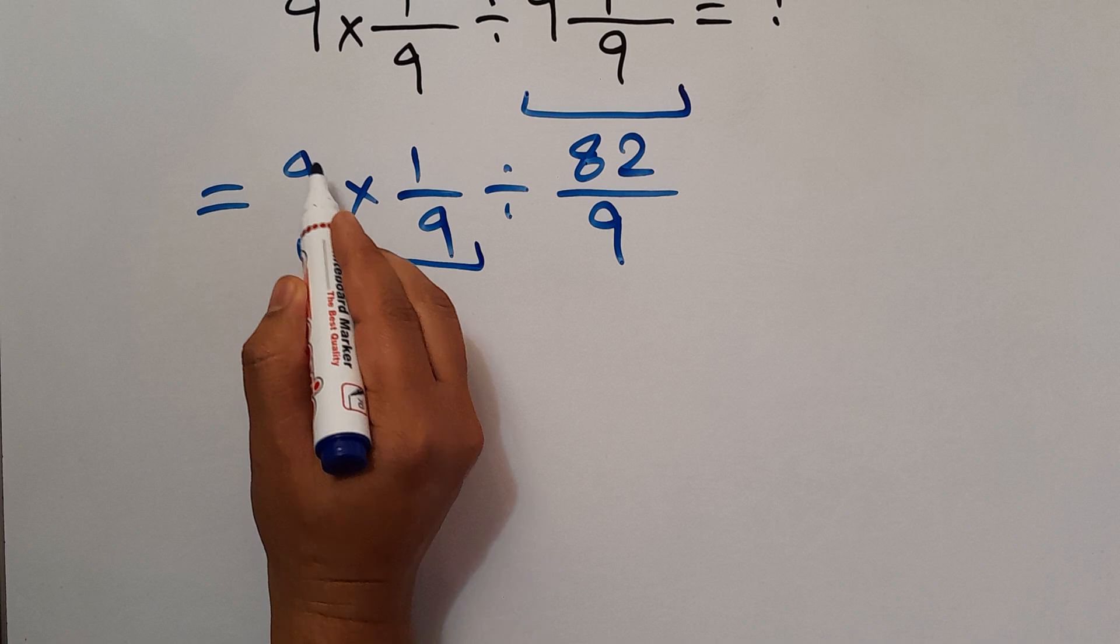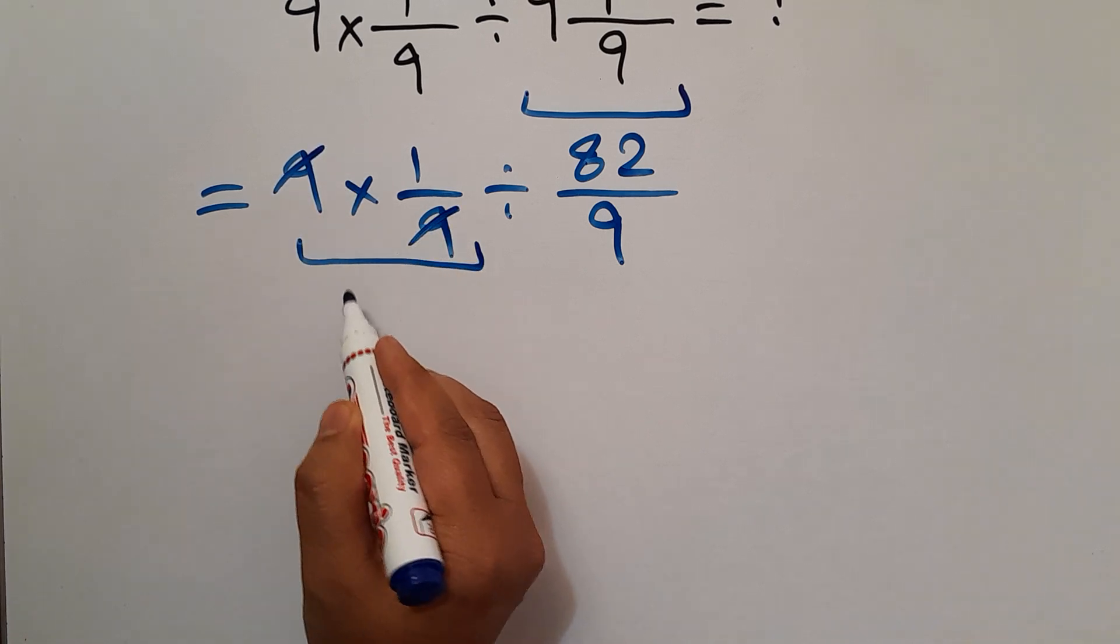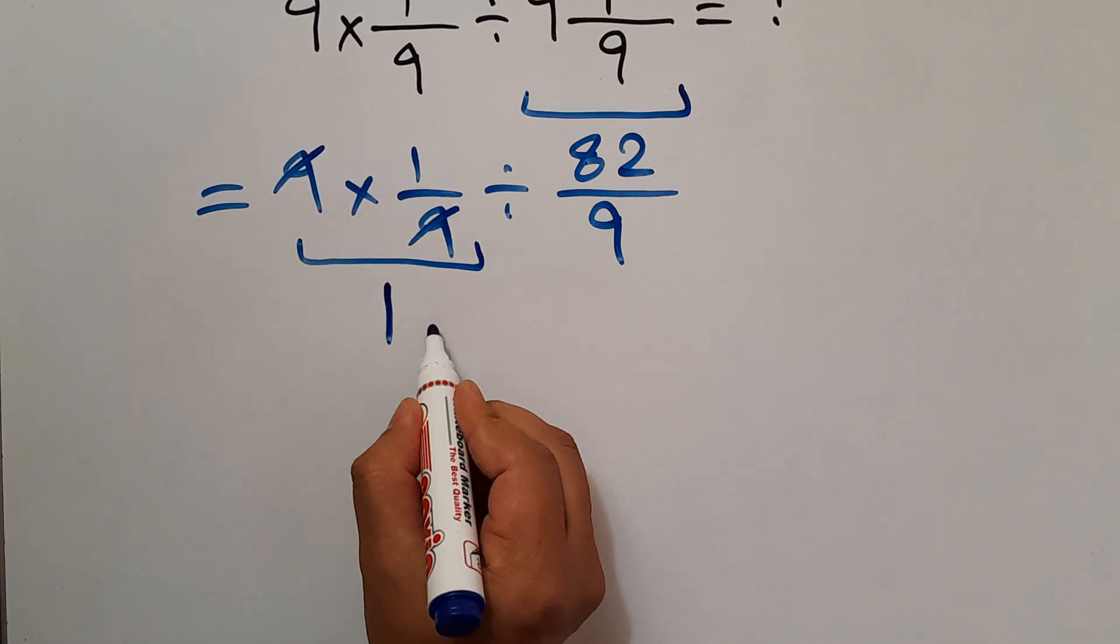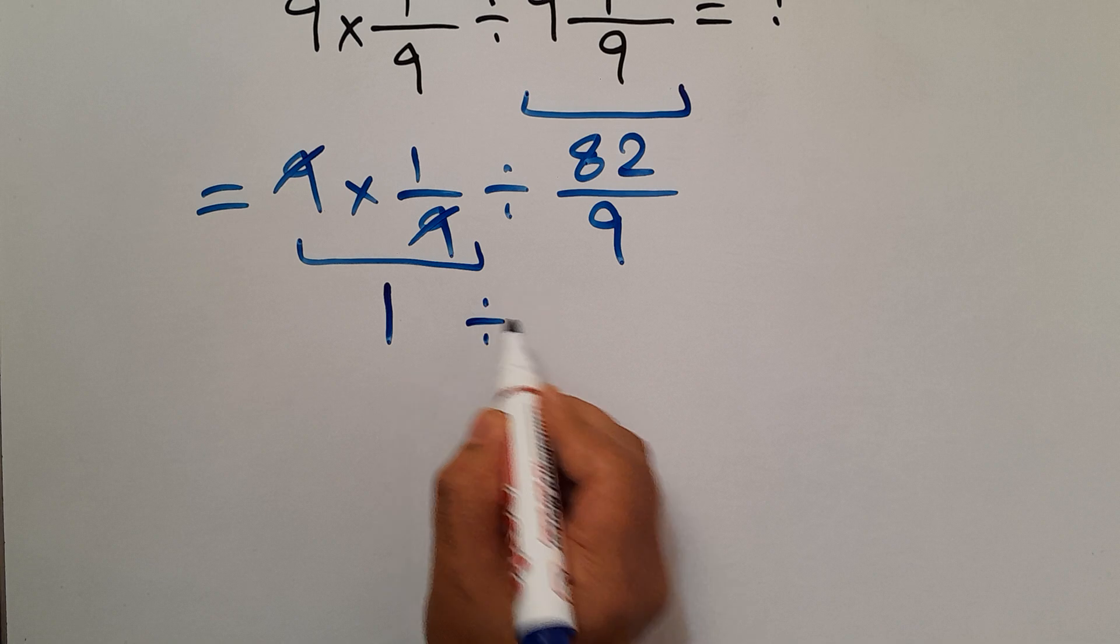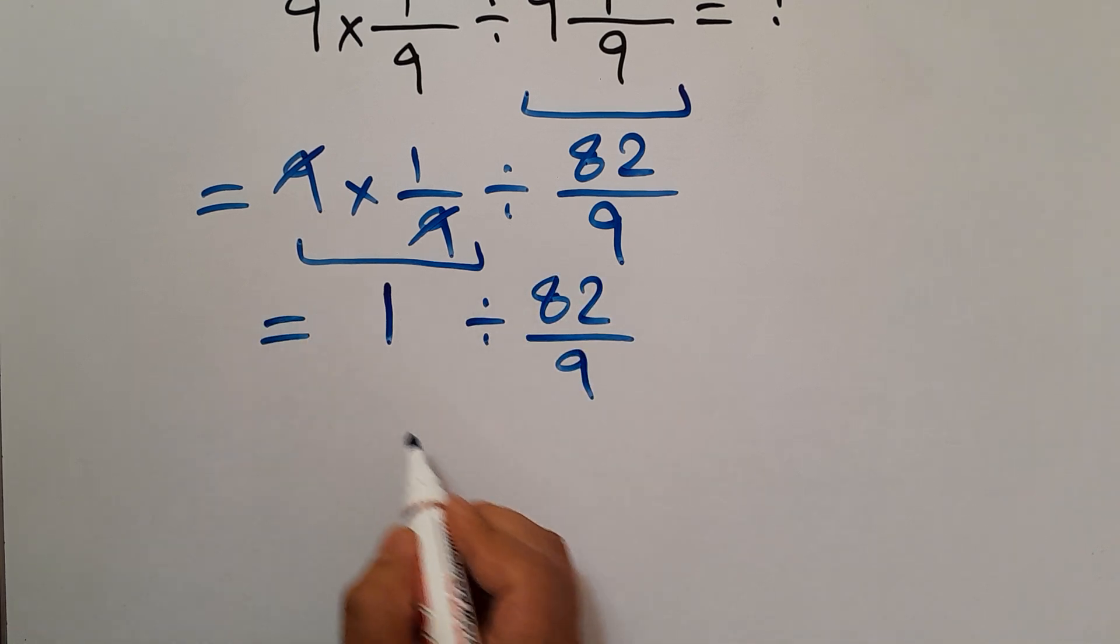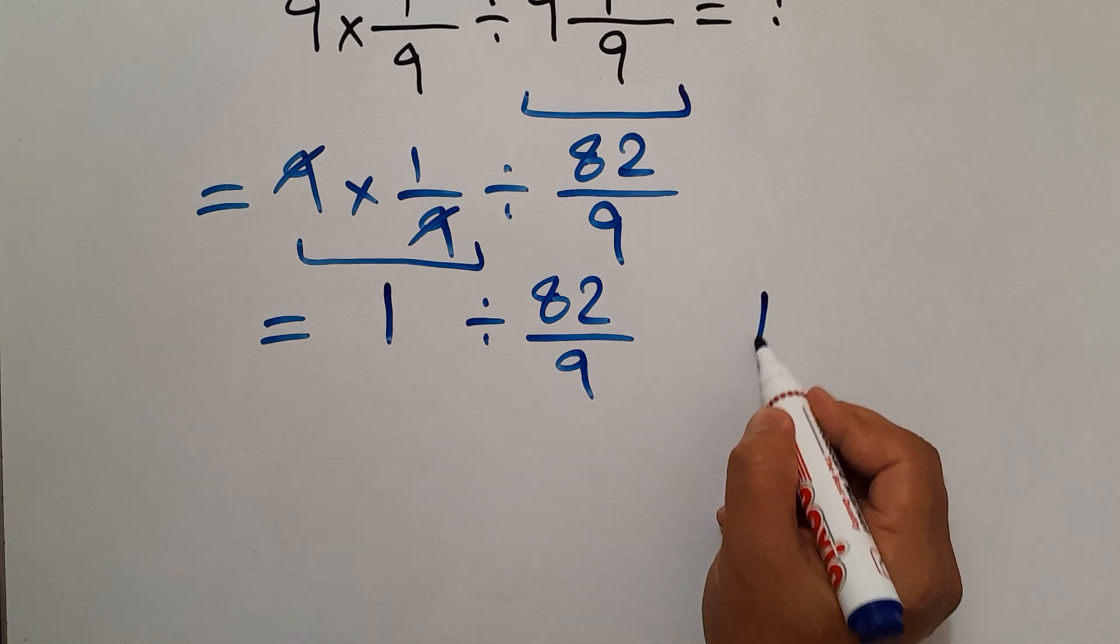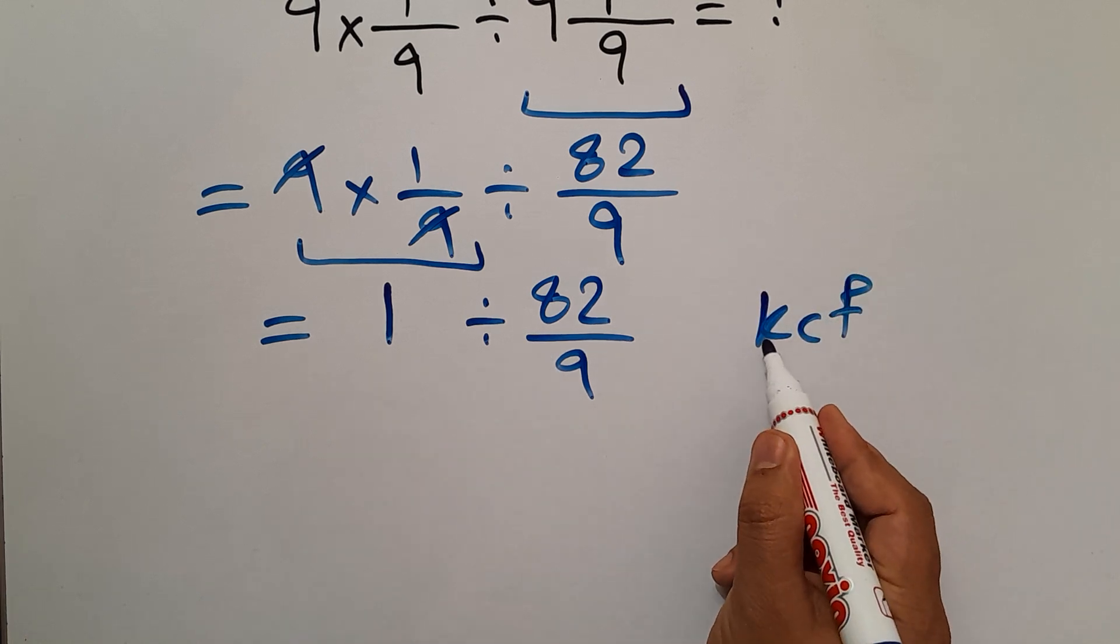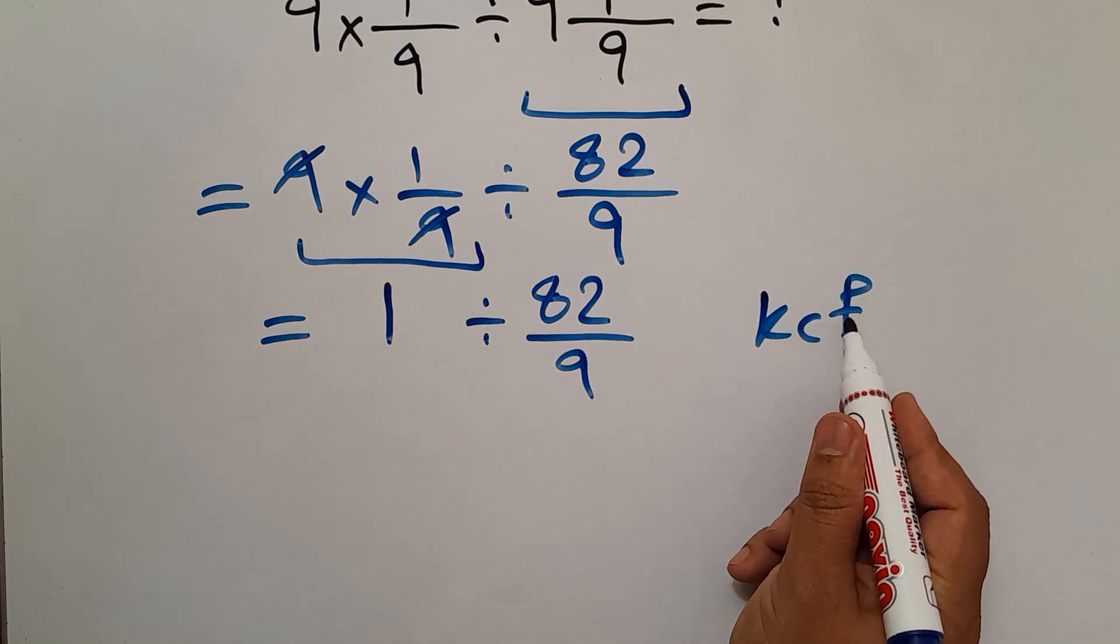So, 1 ÷ 82/9. Now according to the KCF rule: K stands for keep, C stands for change, and F stands for flip. Keep the first fraction, change division to multiplication, and flip the second fraction.